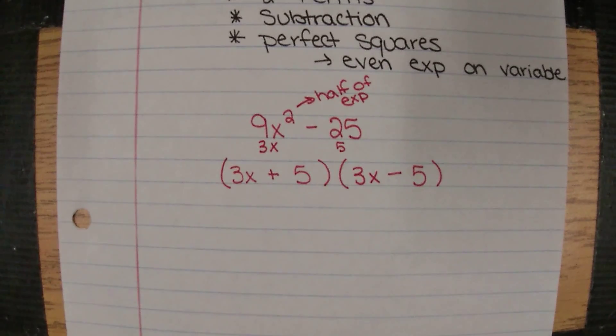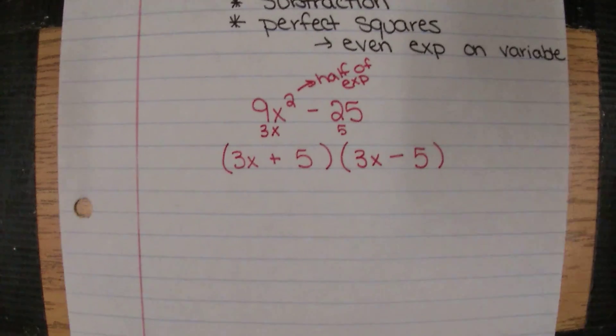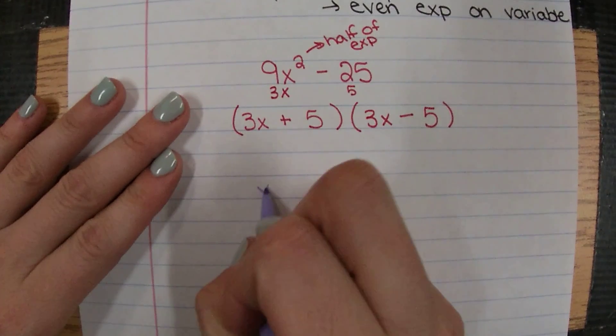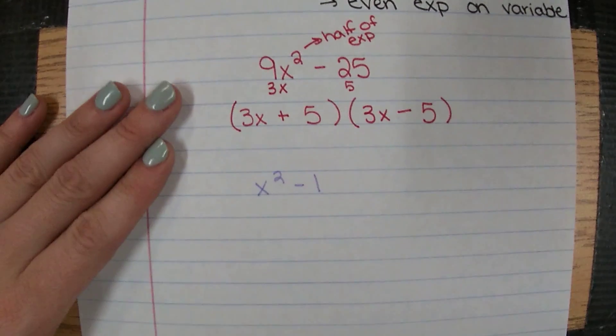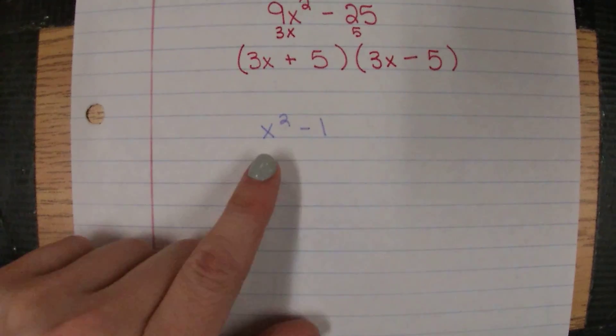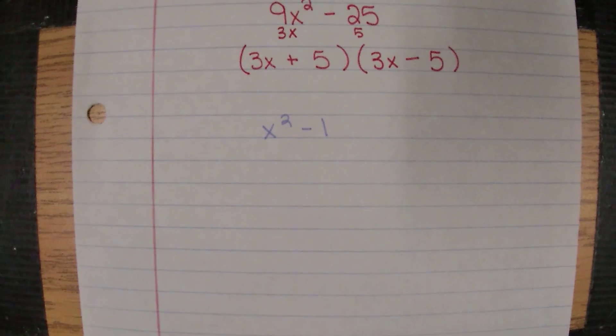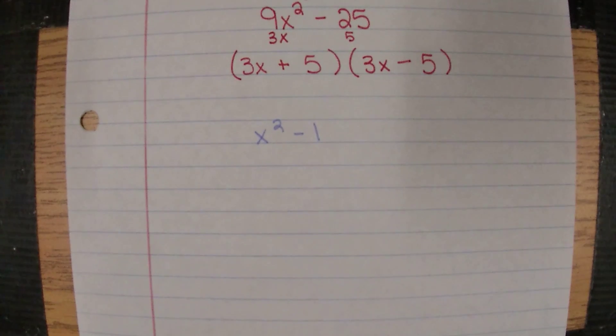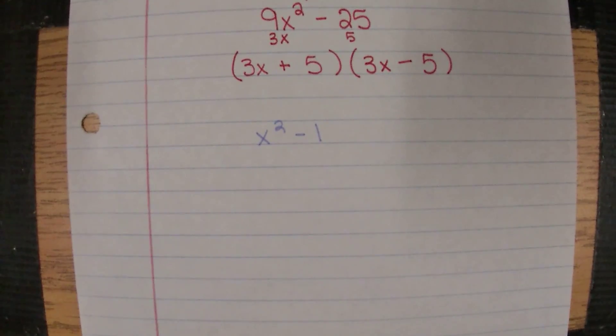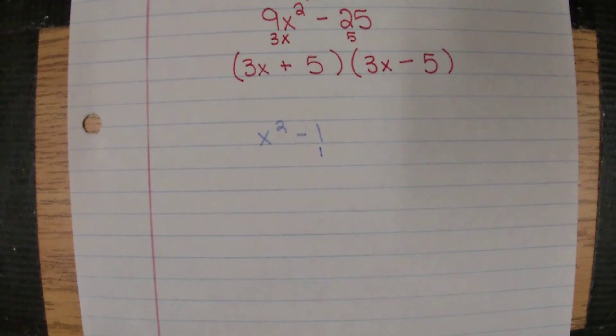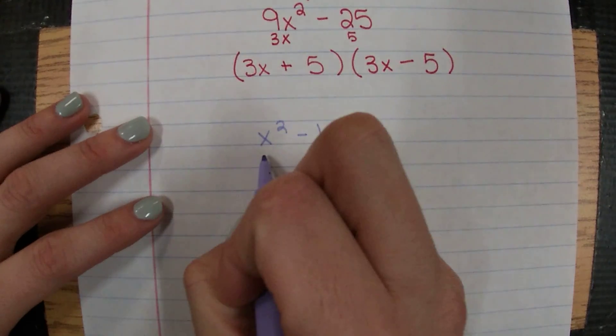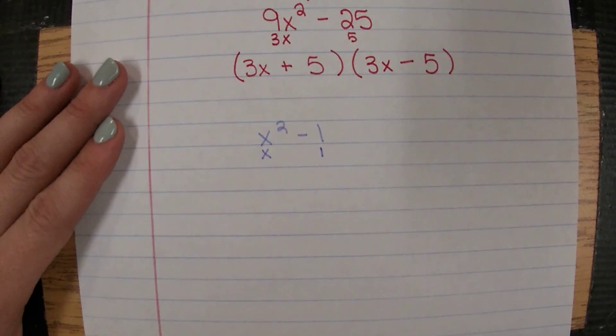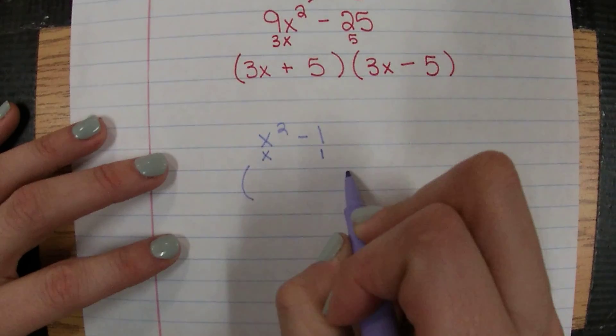Let's look at another one. Let's say we have x squared minus 1. It is two terms, it is subtraction. Now we need to decide if they're both perfect squares. A number times itself that gives us 1? My students are always thrown off by that. Yes it is, 1 times 1 is 1. Then we're taking half of the exponent, so half of 2 is 1. So they're perfect squares, everything's good.